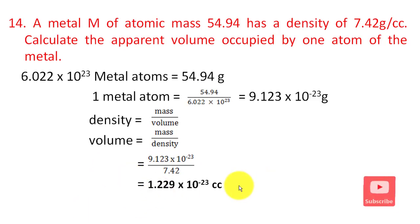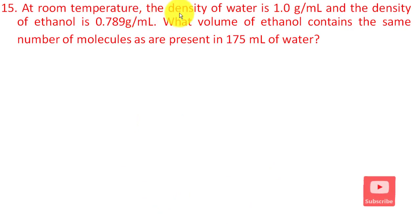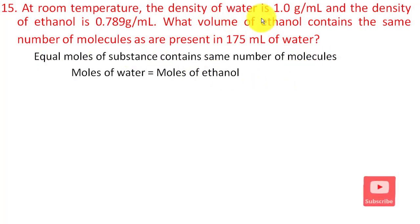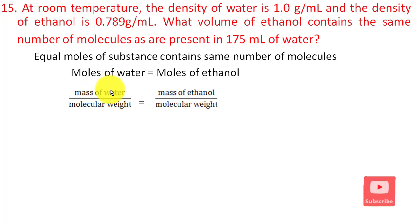The next question: at room temperature, the density of water and the density of ethanol are given. What volume of ethanol contains the same number of molecules as present in 175 mL of water? For the same number of molecules, moles of water equals moles of ethanol. Moles equals mass divided by molecular weight.